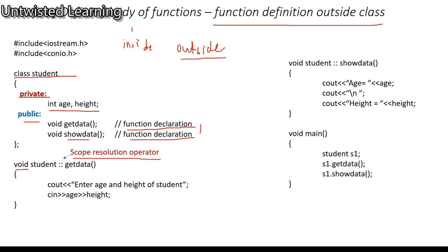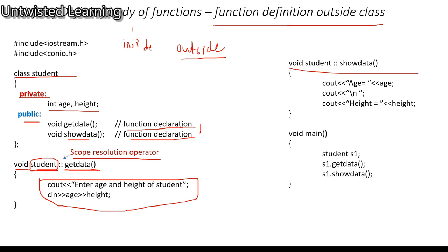To define the function body outside the class, you write: void student::get_data — this tells the compiler that the get data function belongs to class student — then write the function body. The scope resolution operator is two colons. Similarly void student::show_data for the show data function. In void main, student S1 is created, then S1.get_data and S1.show_data are called as before.